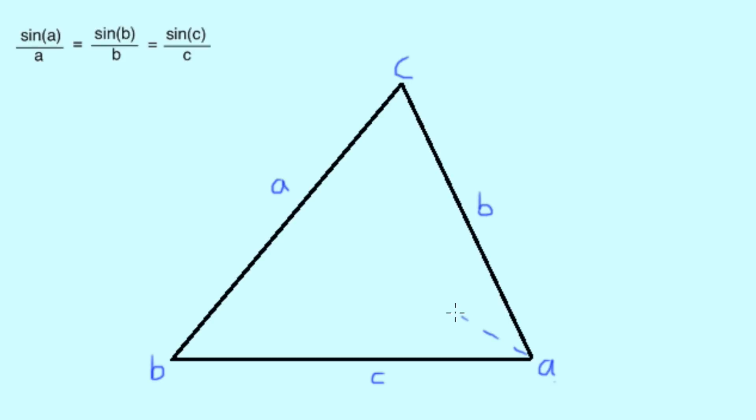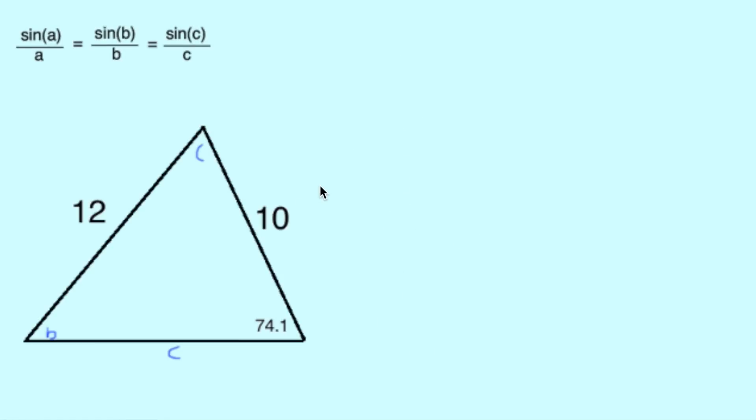The way in which the sides and angles are labelled are important as we can see angle A is opposite side A, angle B is opposite side B and finally angle C is opposite side C. So let's label our triangle with the information we do have. We can see that side A is 12, side B is 10 and we have our angle A measured here at 74.1 degrees.